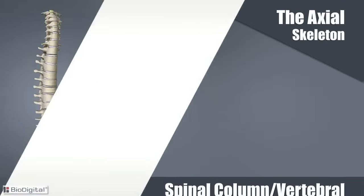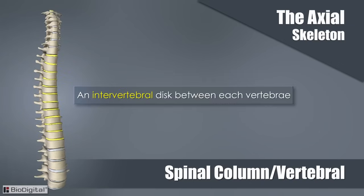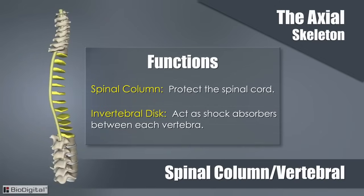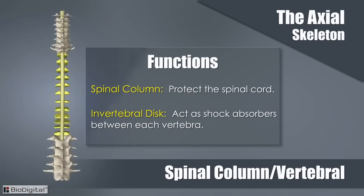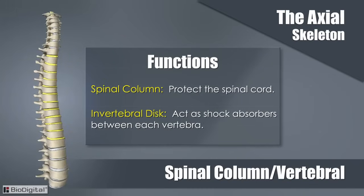The spinal column is also known as the vertebral column. There are 26 vertebrae in the spinal column and an intervertebral disc between each. The vertebral or spinal column's function is to protect the spinal cord. The main function of the intervertebral disc is to act as a shock absorber between each vertebra.